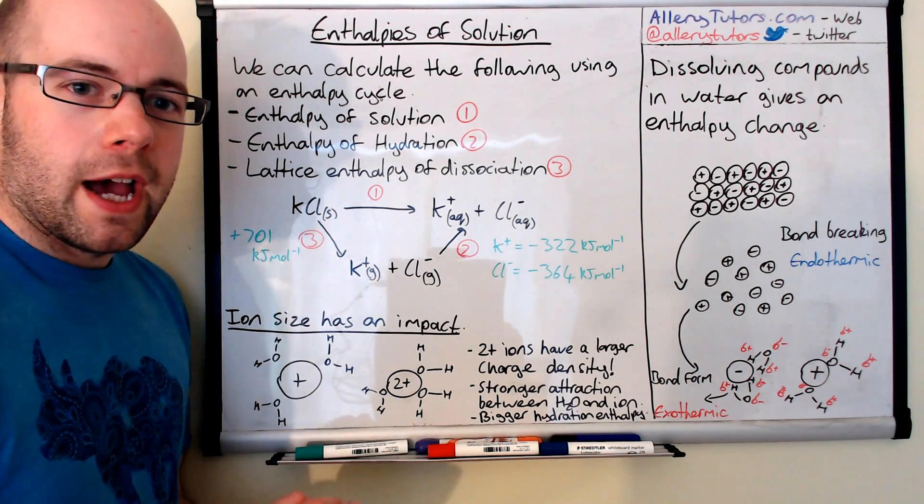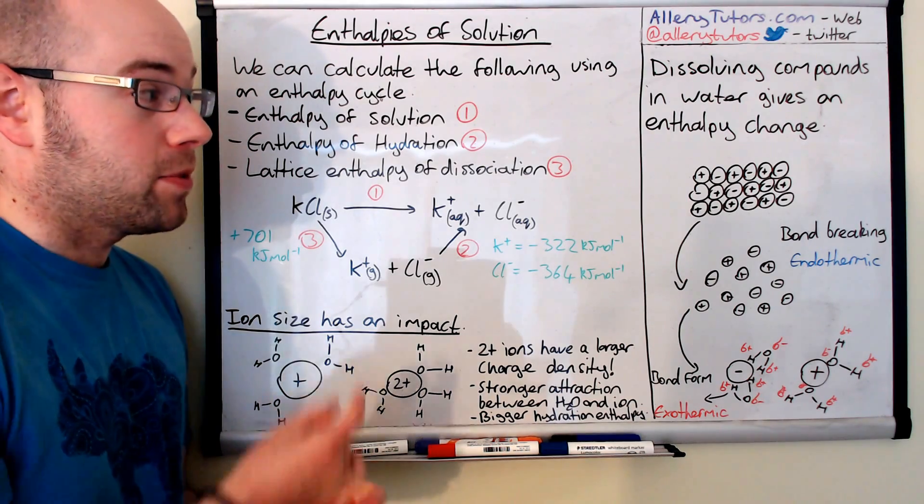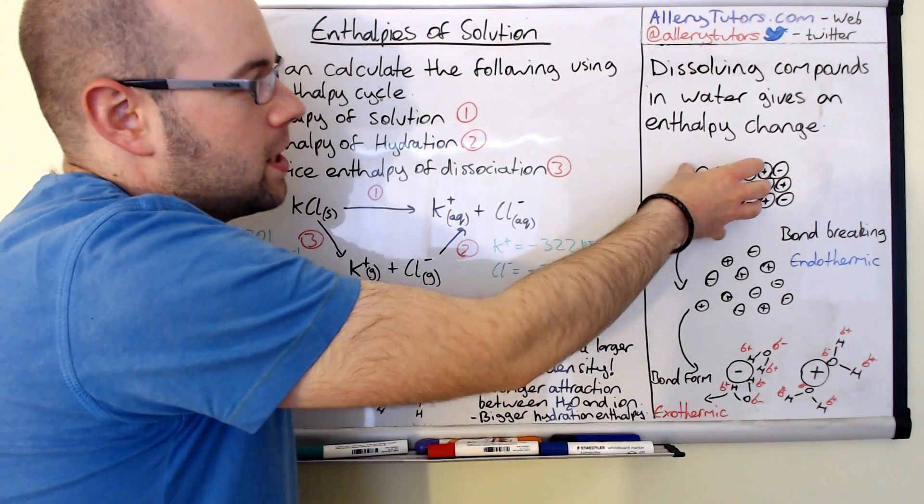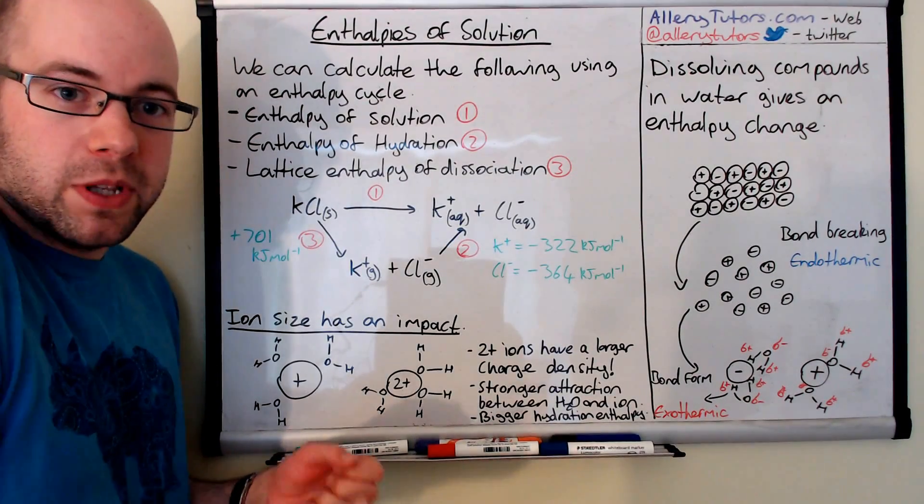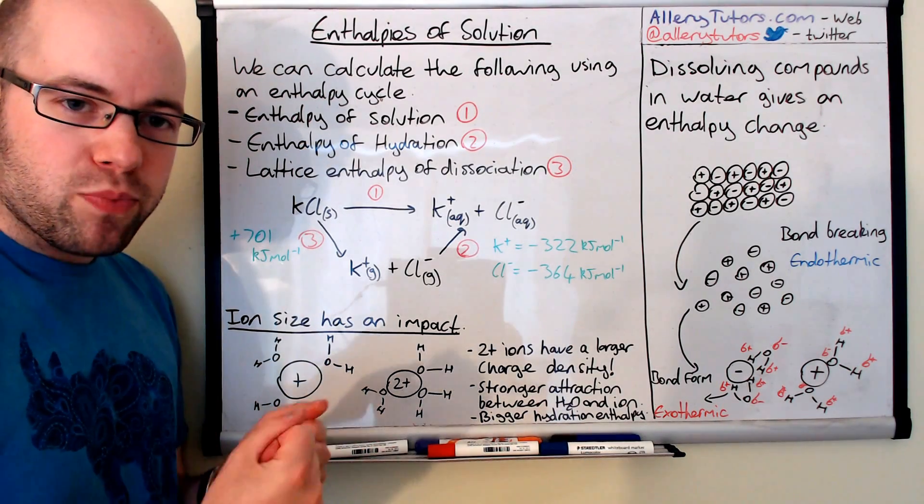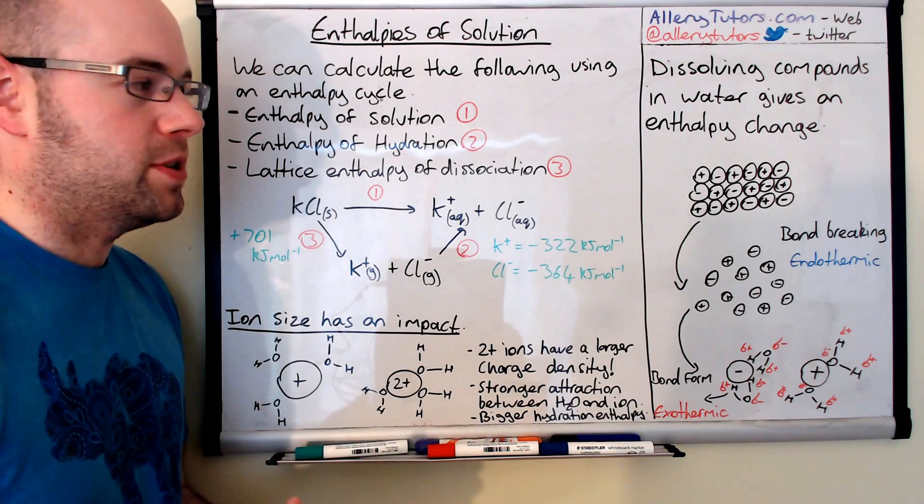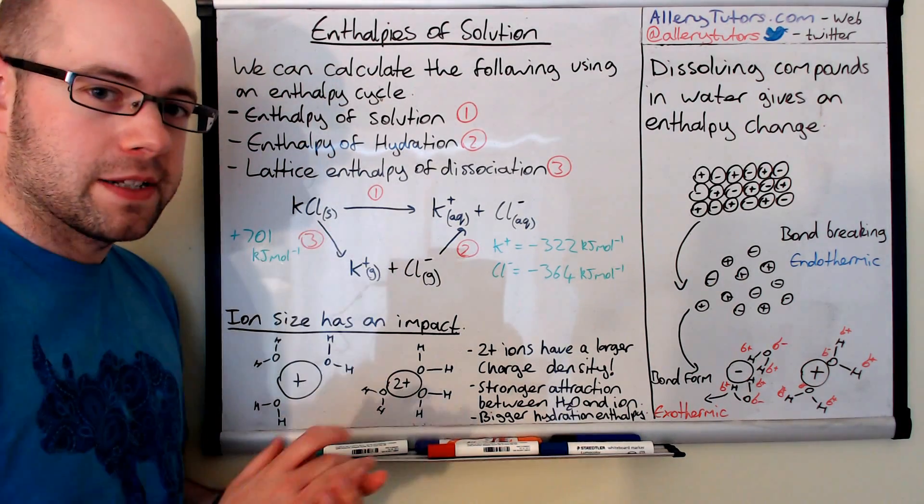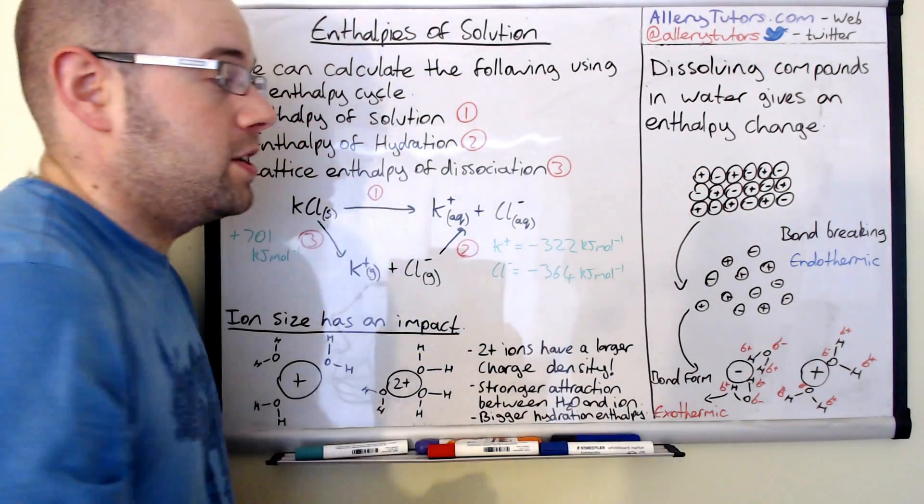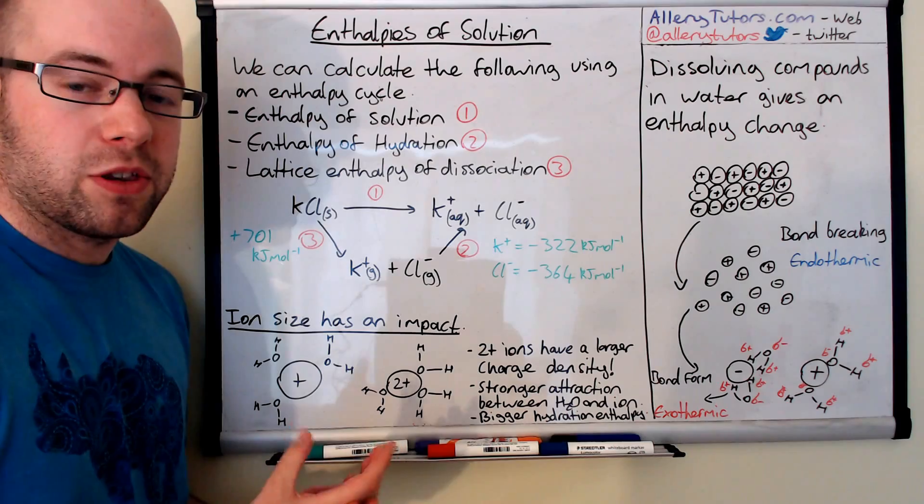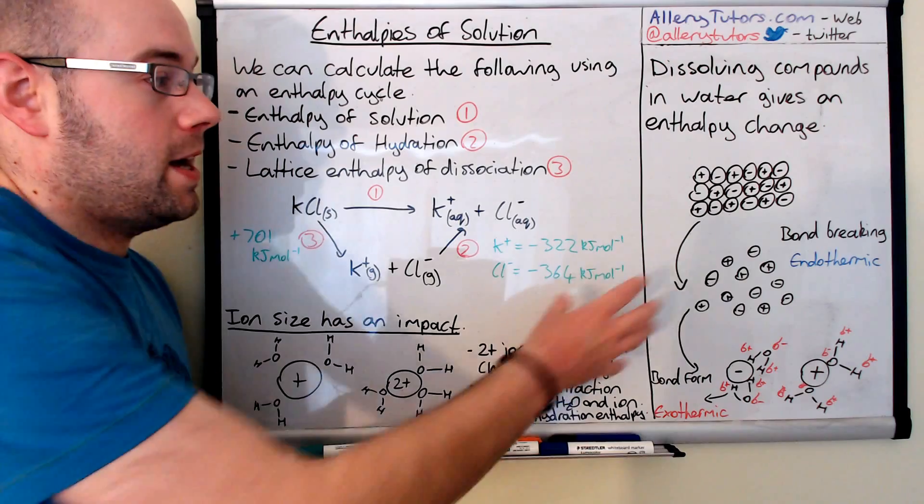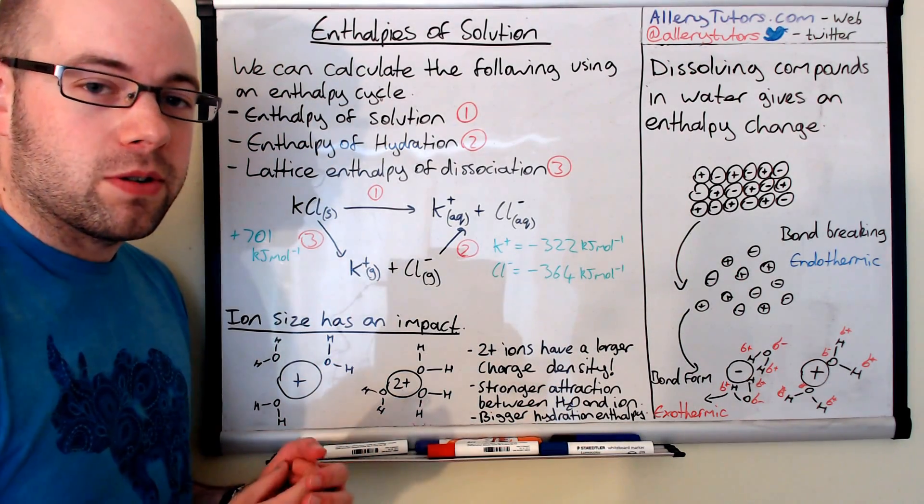But when we dissolve this in water we actually get an enthalpy change and I'm going to explain why we get this enthalpy change using this diagram. So we've got our solid ionic compound. Now when we add it to water the ions, well we should know that the ions break up and the water is involved in breaking up these ions. But if we break it up into two stages to try and explain the enthalpy change, then this can help us to explain how we can calculate it as well.